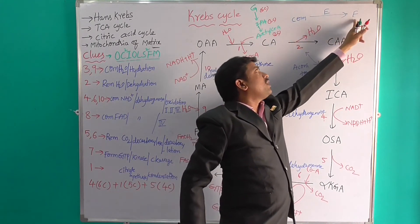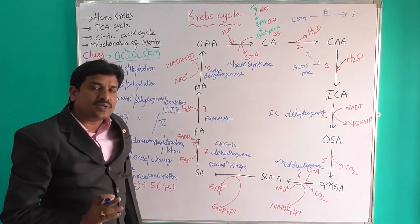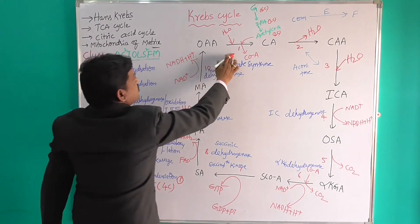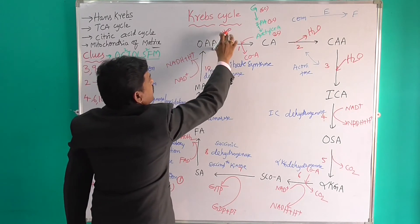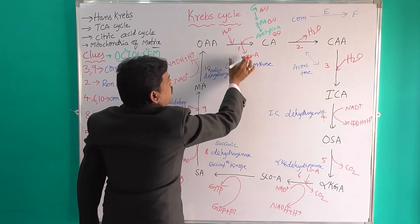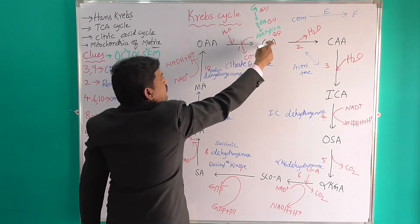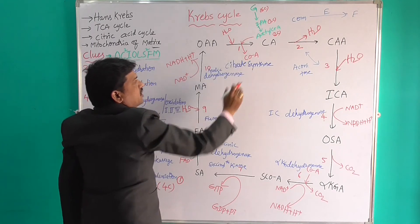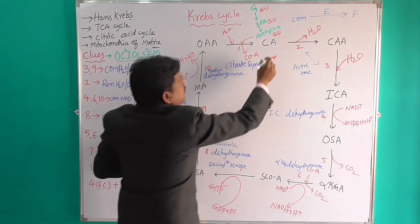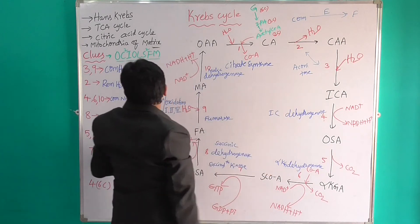With the help of these clues, let us complete the total explanation of all 10 stages. Stage 1 name is Condensation. Oxaloacetic acid is combined with water and Acetyl-CoA to form Citric acid and Coenzyme A, in the presence of Citrate Synthase. Stage 2 name is Dehydration: Citric acid undergoes dehydration to form Cis-aconitic acid, in the presence of Aconitase enzyme.